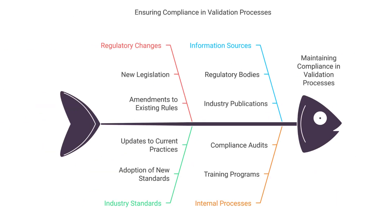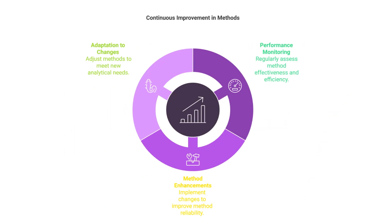Tip 9: Stay updated with regulations. Keep abreast of the latest regulatory guidelines and industry standards. Regulatory requirements can change, and staying informed ensures that your validation processes remain compliant. Tip 10: Continuous improvement. After validation, continuously monitor the method's performance and be open to making improvements. Regular reviews and updates can enhance method reliability and adapt to changes in analytical needs.